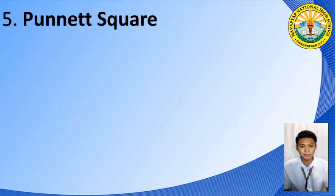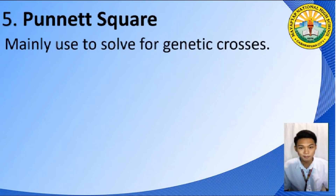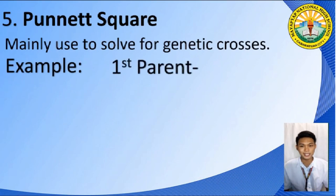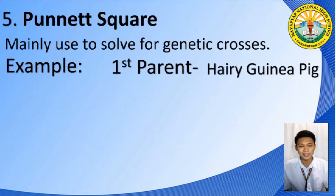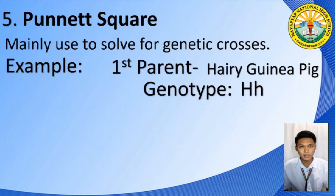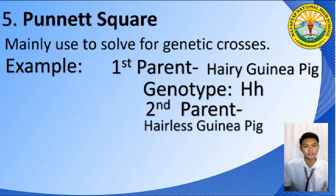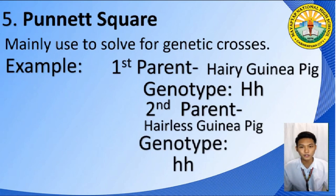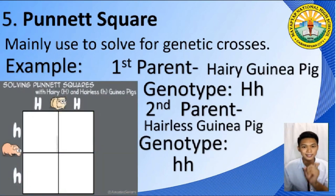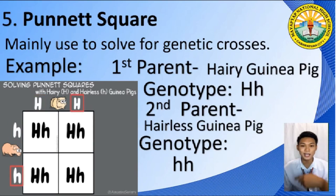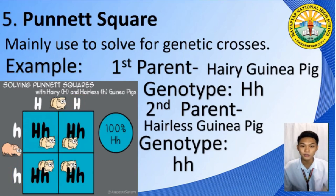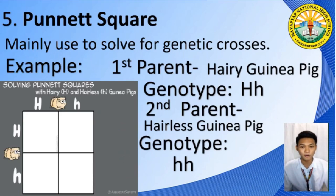The fifth thing that you should know and be familiar with is Punnett Squares. Punnett Squares are mainly used to solve all genetic problems. Let us have a guinea pig for an example. Our first parent is a hairy guinea pig with a genotype of a capital letter H and a small letter H. Then we have a hairless guinea pig as our second parent with a genotype of two small letters H. In order to properly use a Punnett Square, you have to draw a square and cut it into four halves.